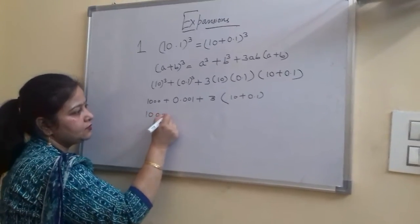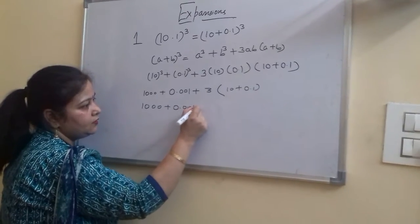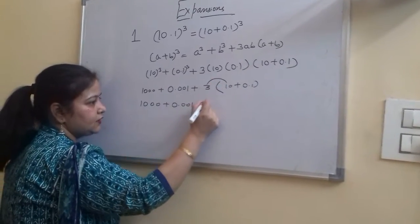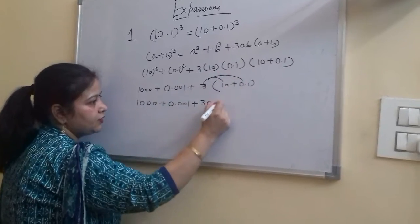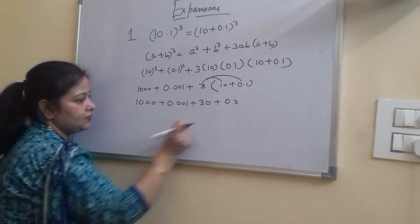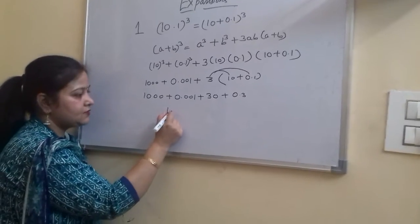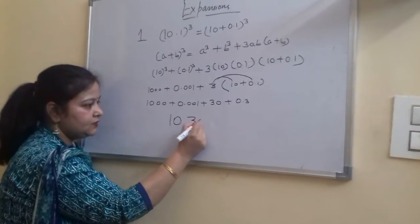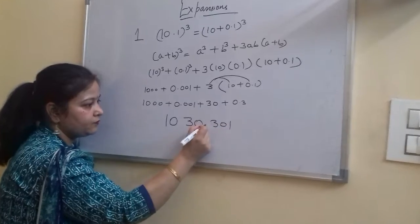So we have 1000 plus 0.001 plus 3 into 10 which is 30, and 3 into 0.1 which is 0.3. When you add all of this, you will get the answer 1030.301.